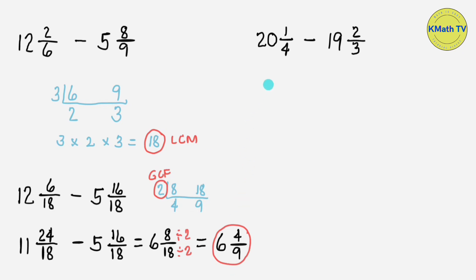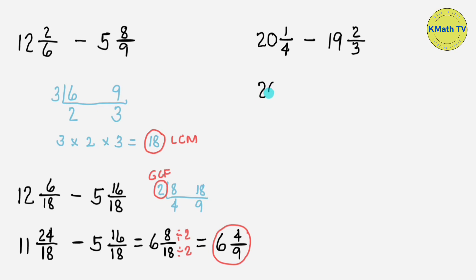Next example: let's subtract 20 and one-fourth minus 19 and two-thirds. The denominators are not the same, so we need to get the LCD and change the fractions to similar fractions. The denominators are 4 and 3, which are consecutive numbers, so to get the LCD fast, just multiply 4 times 3. 4 times 3 equals 12, so the LCD is 12. Copy the whole number 20, then write LCD 12, minus whole number 19 and LCD 12.